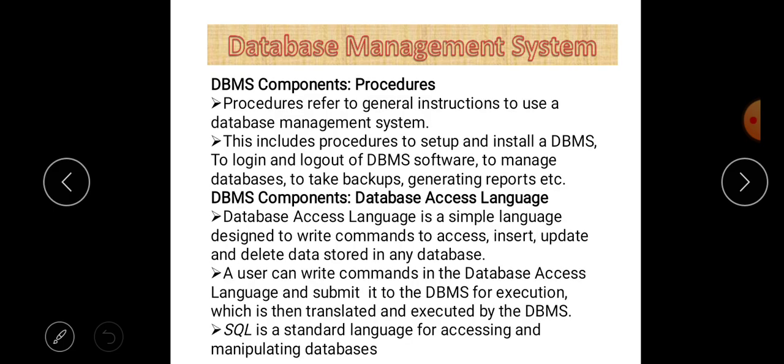One more important concept: a branch of DBMS known as RDBMS — Relational Database Management System. In RDBMS, data is stored in the form of tables, which have rows and columns. The name of columns are called attributes and rows are called tuples. Most modern DBMS systems like MySQL, Oracle, and MS Access are examples of RDBMS, and all of these follow SQL — Structured Query Language — by which we can create or manipulate data in a database.